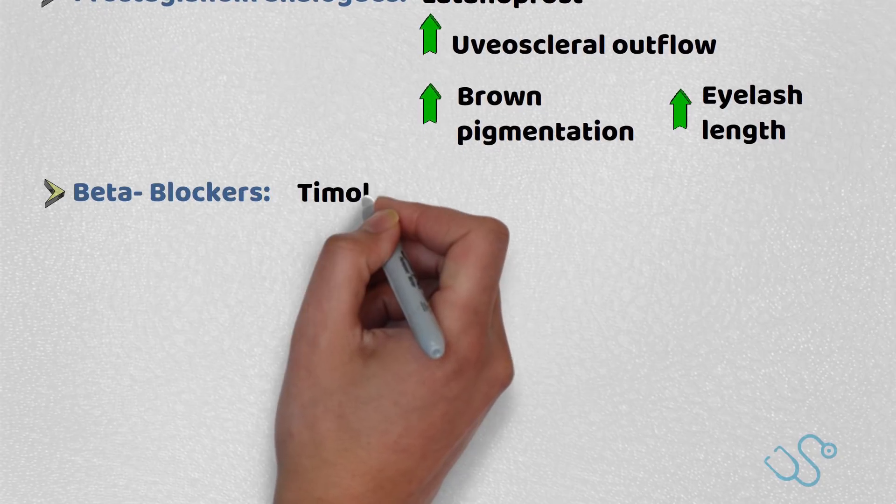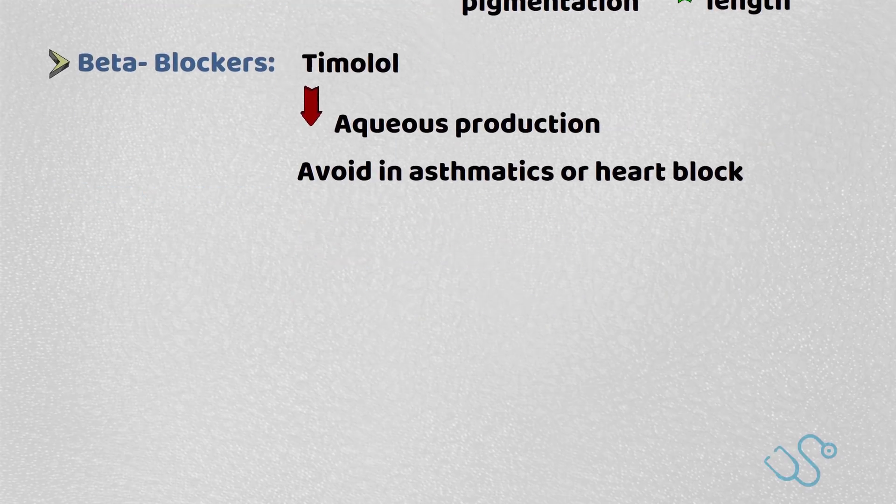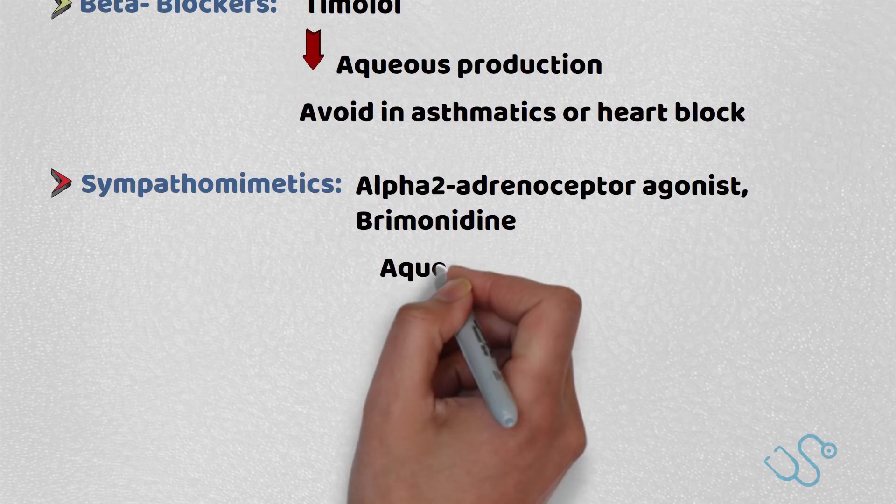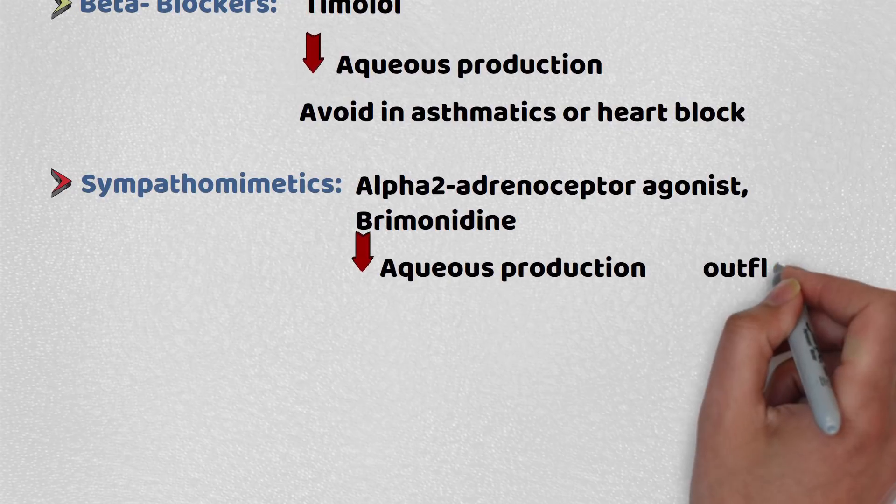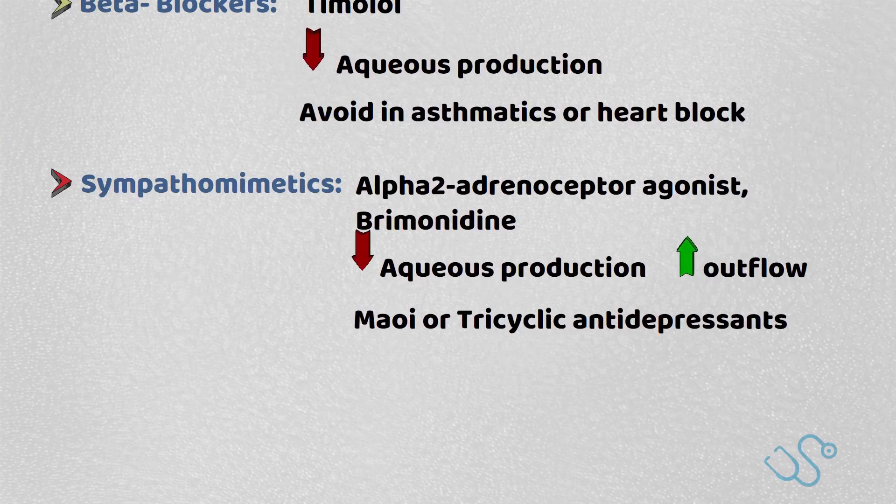Beta blockers like timolol reduce aqueous humor production, but they should be avoided in asthmatic patients or those with heart blocks. Alpha-2 receptor agonists like brimonidine also reduce aqueous humor production and increase outflow, but they can cause hyperemia and there needs to be care when using them with antidepressants.